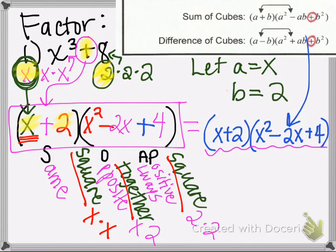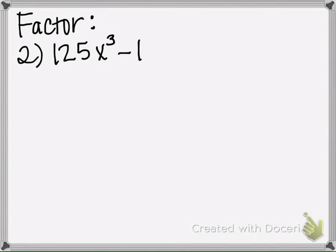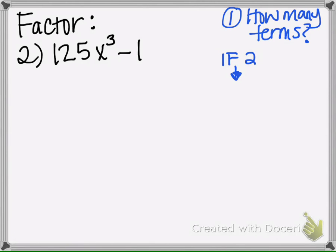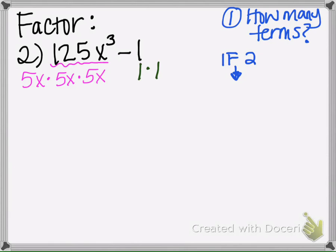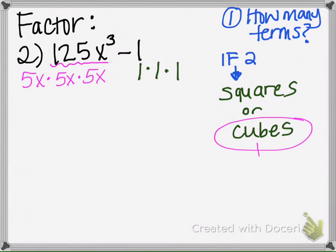Let's try this again. First thing: we ask ourselves how many terms there are — there are two. Since there are two terms, we ask ourselves: can you think of anything times itself three times that will make 125x cubed? For example, 5x times 5x times 5x results in 125x cubed. Then we ask: what times itself three times is one? One times one times one is one. That's how we know we're going to use the SOAP method, because we found something cubed that results in the original problem.